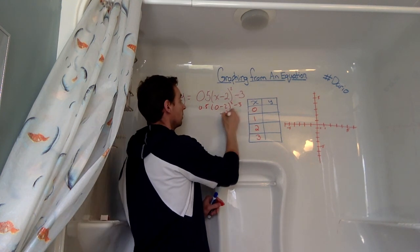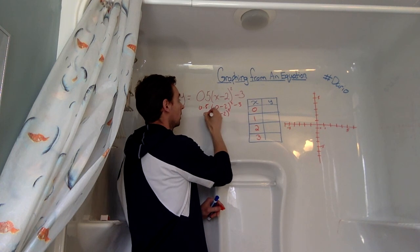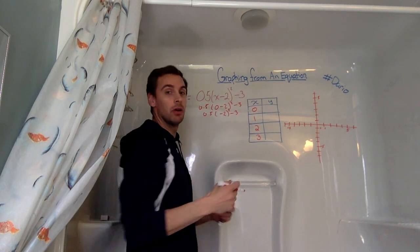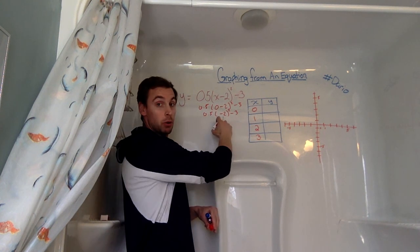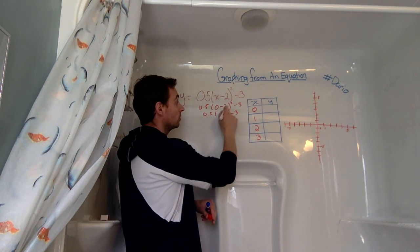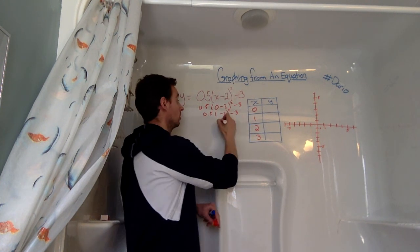So 0 minus 2 is negative 2 squared, and then we're going to follow order of operations. So we started with our brackets, we solved them there first. Now we need to move to exponents through BEDMAS. Negative 2 squared, which is negative 2 times negative 2, gives us 4.